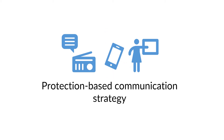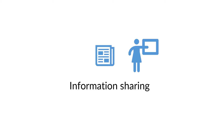A protection-based communication strategy is an essential component of the targeting process. It includes information sharing with refugees, such as on eligibility requirements and how to appeal, and also with host communities, government, and partners at key stages throughout the targeting process, while ensuring accessibility to communication for refugees regardless of age, gender, or other diverse characteristics.